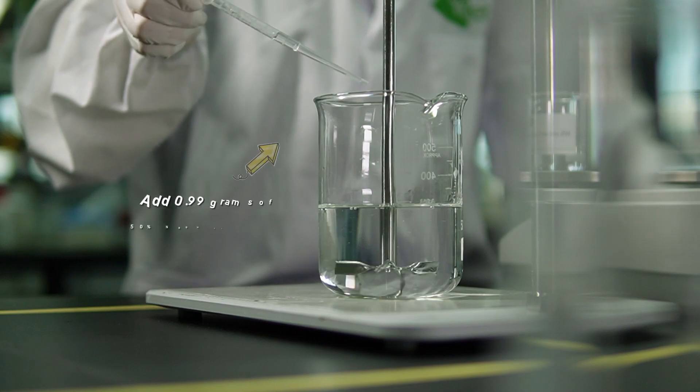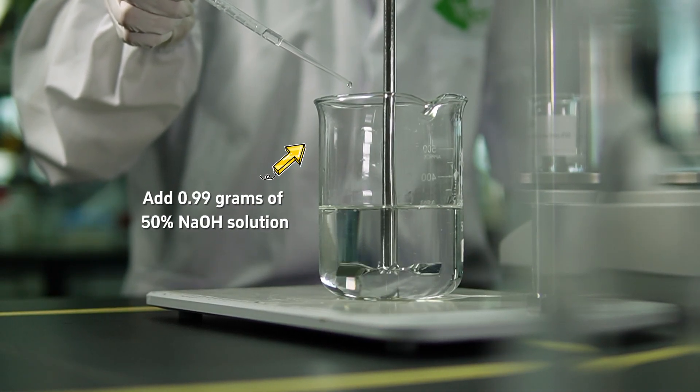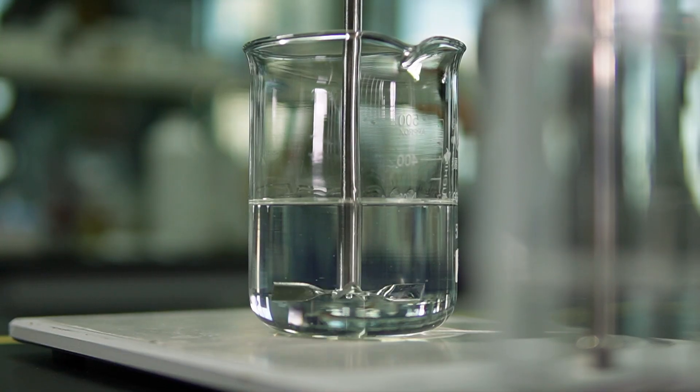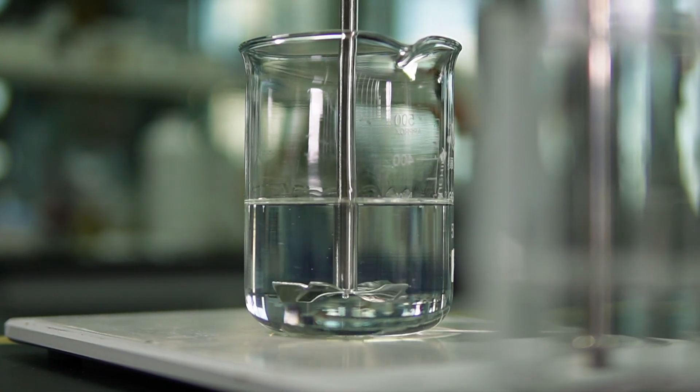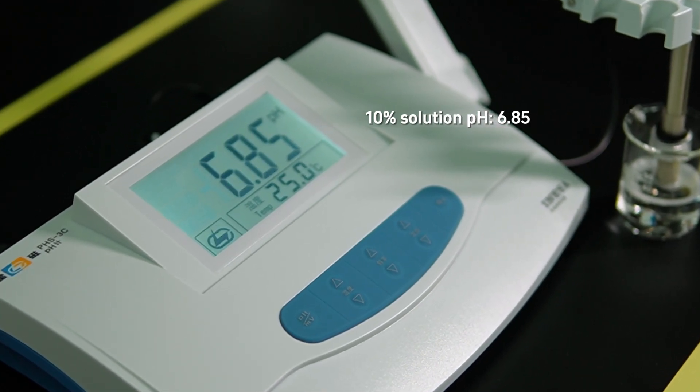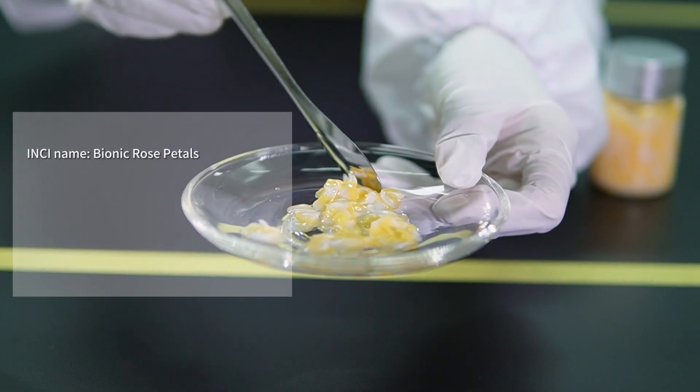We begin by adding just the right amount of 50% sodium hydroxide solution. Our goal? To adjust the pH to a range of 6.5 to 7.0. This ensures that our Rose Petal Reverie Bath Gel not only looks beautiful but is also gentle and kind to your skin. And now, the pièce de résistance, our bionic rose petals.